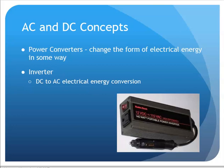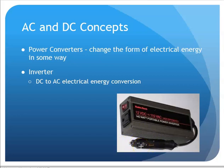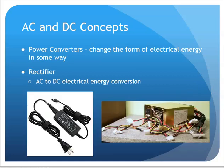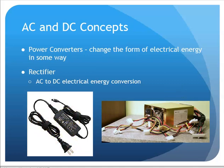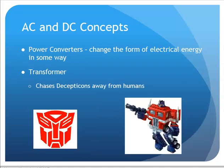An inverter can change DC electricity — like plugging into the utility port in your car, which is DC power — and produce AC power from it. A rectifier, like the power supply in your computer, can take AC and generate DC. A laptop charger is also a rectifier: AC comes out of the wall and it rectifies that into DC power for charging the battery in your laptop.